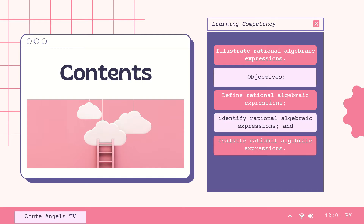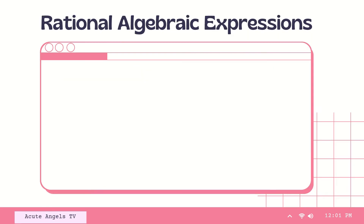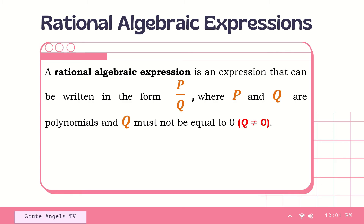Let us first define rational algebraic expressions. A rational algebraic expression is an expression that can be written in the form p over q, where p and q are polynomials, and q must not be equal to zero. In other words, a rational algebraic expression is an expression whose numerator and denominator are polynomials.